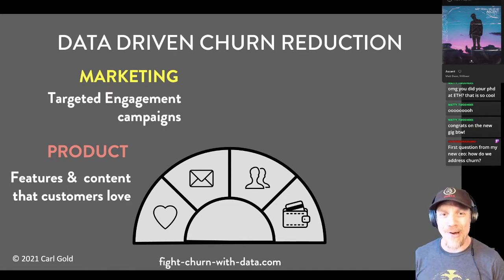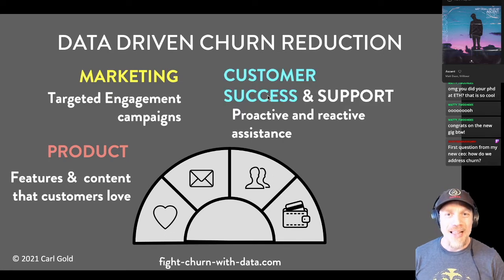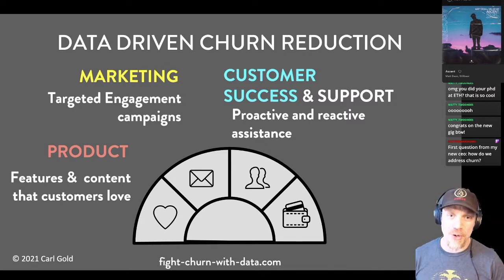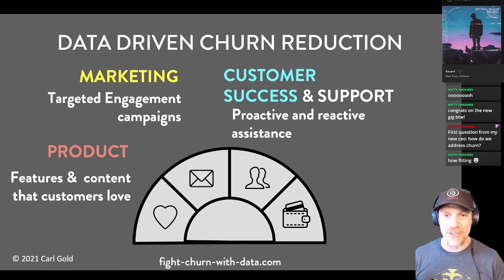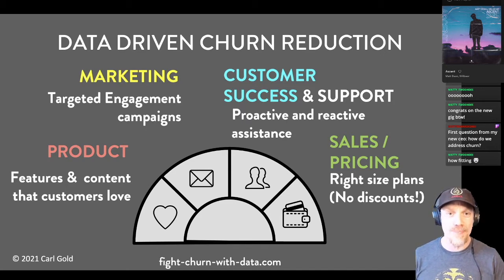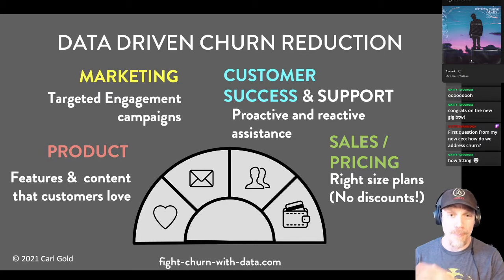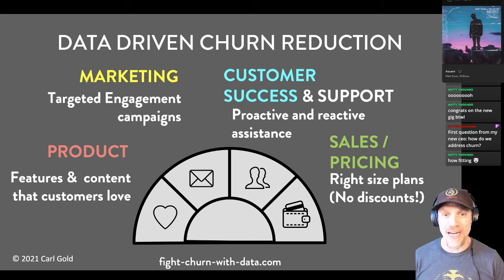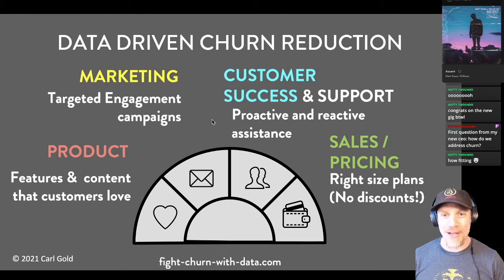Scott's boss asks how to address churn. You address it with targeted messaging to engage your customers, and also with customer success — your customer success team goes right to the people who need help. You also fix up your sales and pricing. A lot of people think reducing churn just means giving away discounts, but that undermines your pricing structure. You can have a multi-tier pricing plan and move people around to fight churn, without giving out discounts.